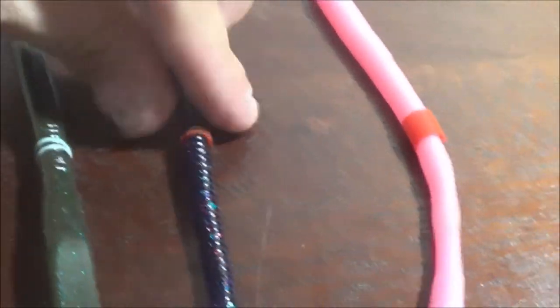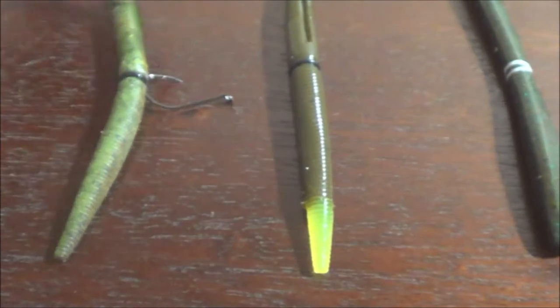For instance, on this Zoom Bug worm, it's got that red and blue flake in it, with that red band. It kind of looks cool. And you don't have to use a Senko or a stick bait.